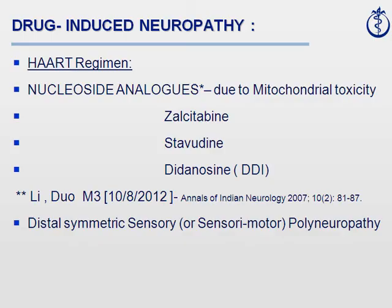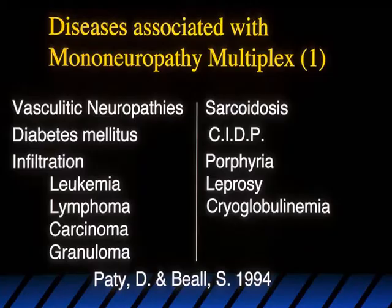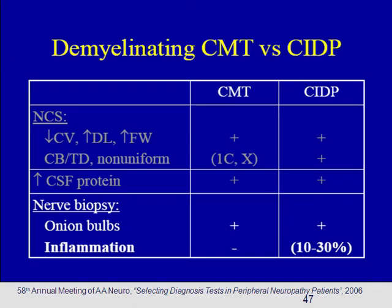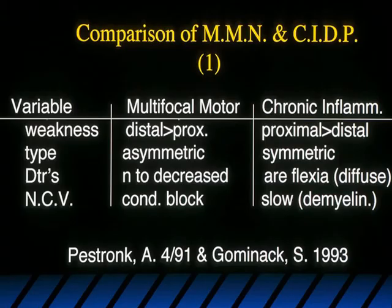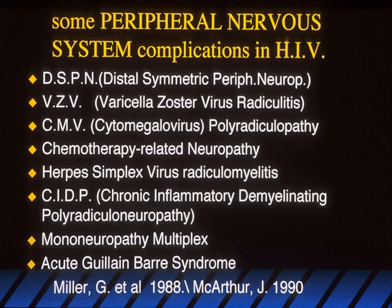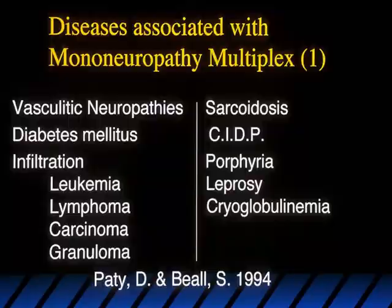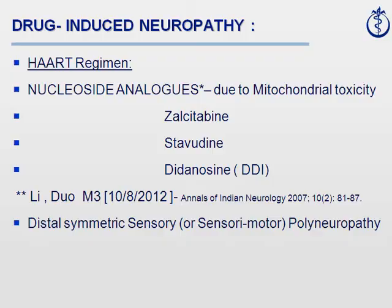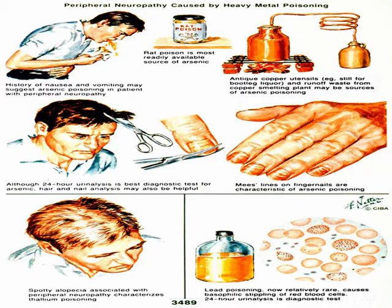The HIV drugs that can cause neuropathy include DDI, stavudine, and zalcitabine. When treating HIV — particularly with the HAART regimen — if you start to have symptoms and signs suggesting neuropathy, consider that it could be the drugs.